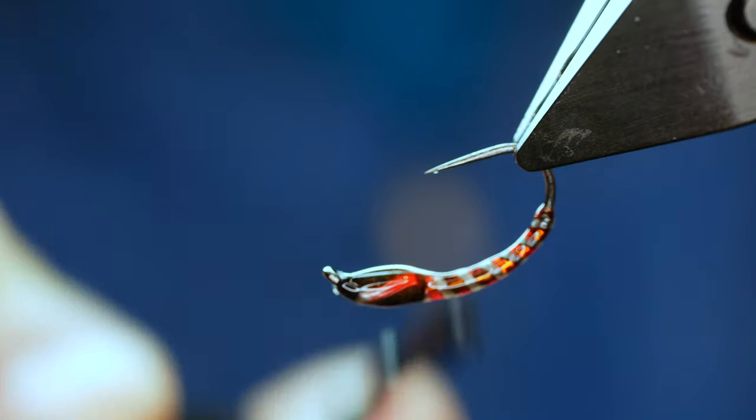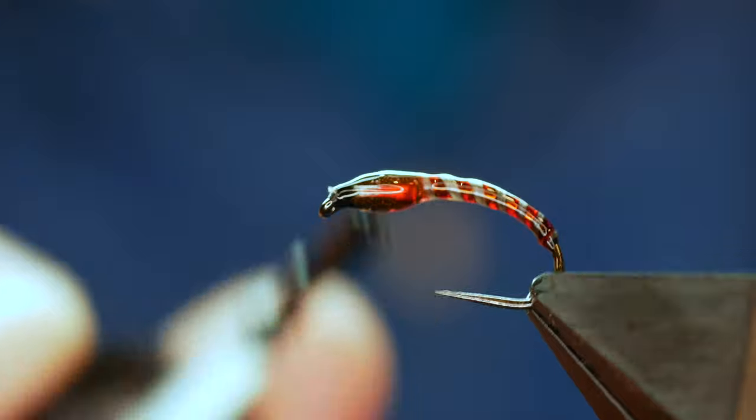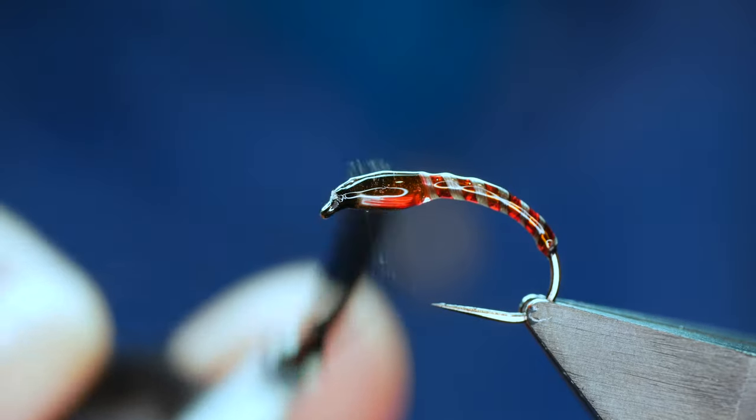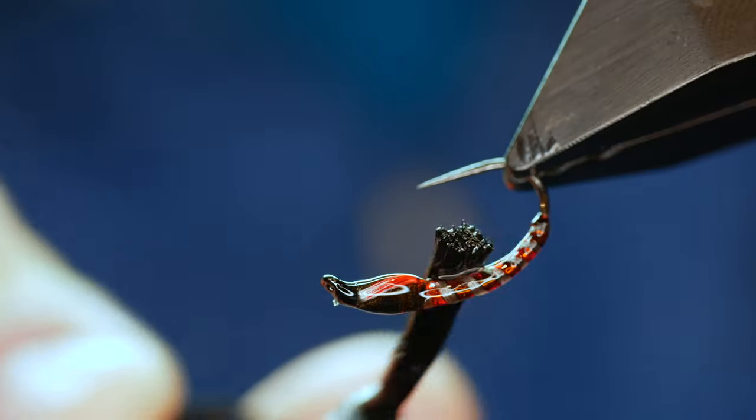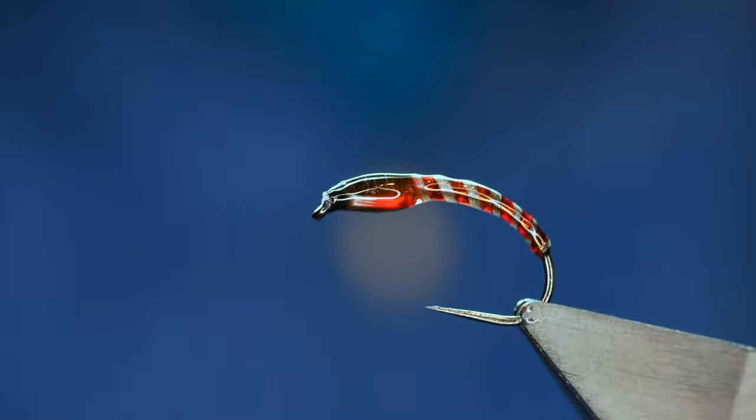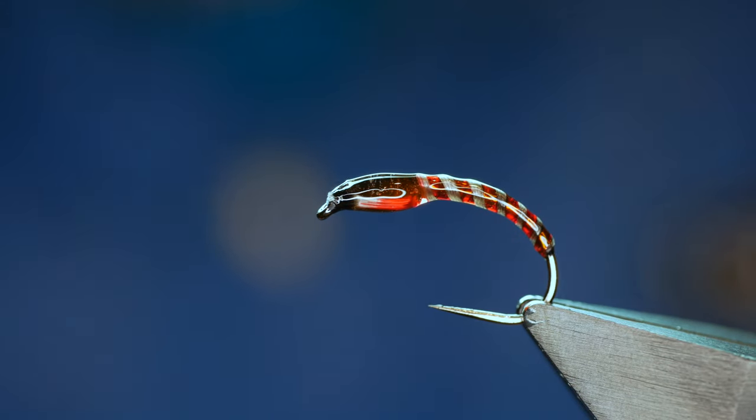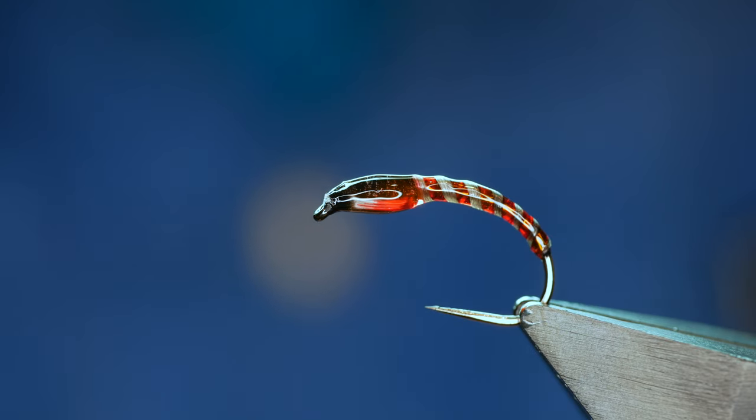Of course if you've got a good UV resin like Solarez, you might not want to bother with this stage. But I always like to seal this type of buzzer with normal varnish. Because it takes a lot of effort to tie it. And I want it to last as long as possible. So I'll set that off to the side to dry.